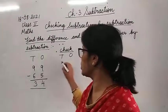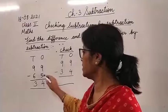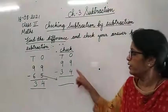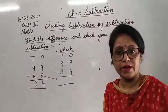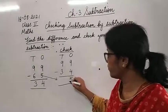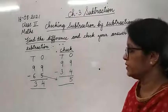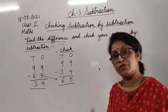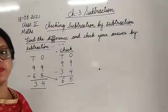Now check: 99 stays. Write 34 below and subtract. 9 minus 4: take away 4, count from 4 onwards - 5, 6, 7, 8, 9 - that is 5. Then 9 minus 3: take away 3, count from 3 onwards - 4, 5, 6, 7, 8, 9 - that is 6. We got 65, same as the number we had originally subtracted. So this subtraction is also correct.